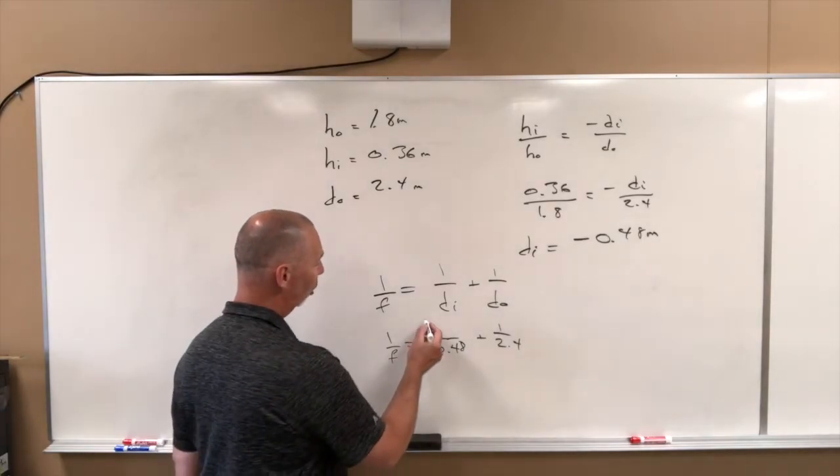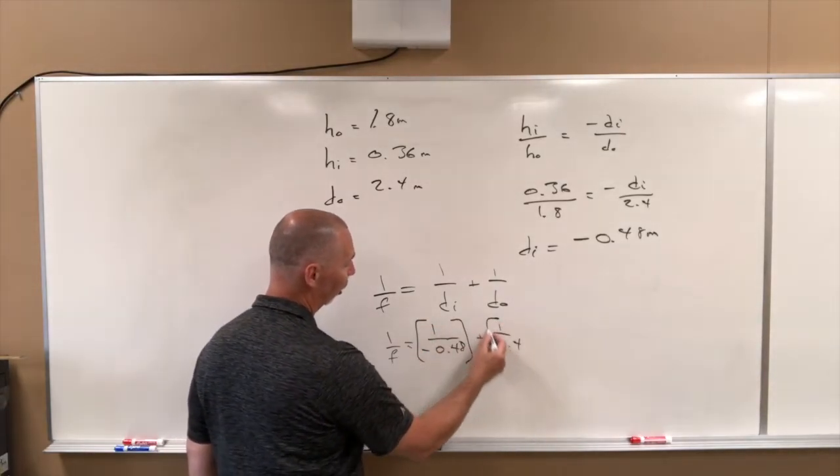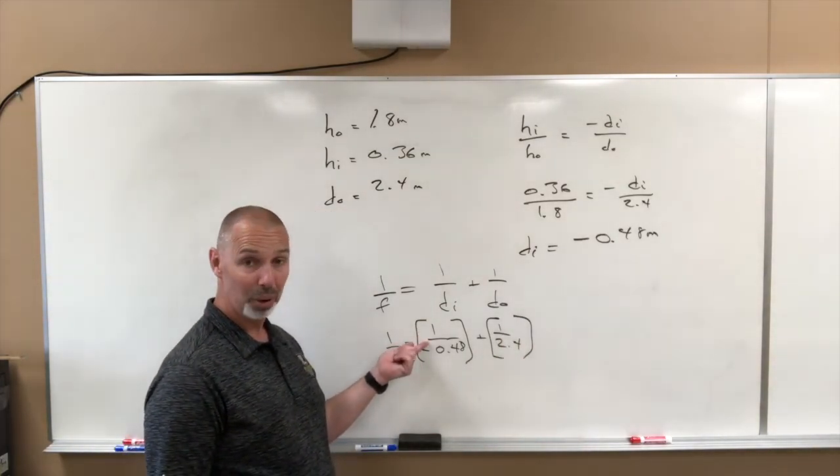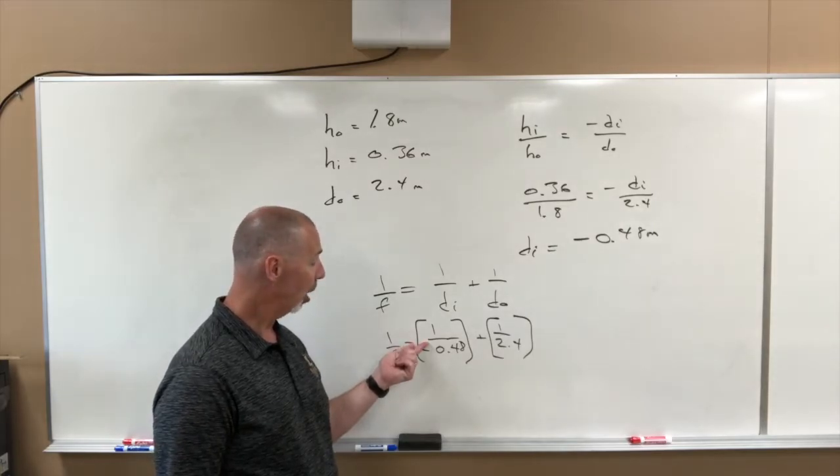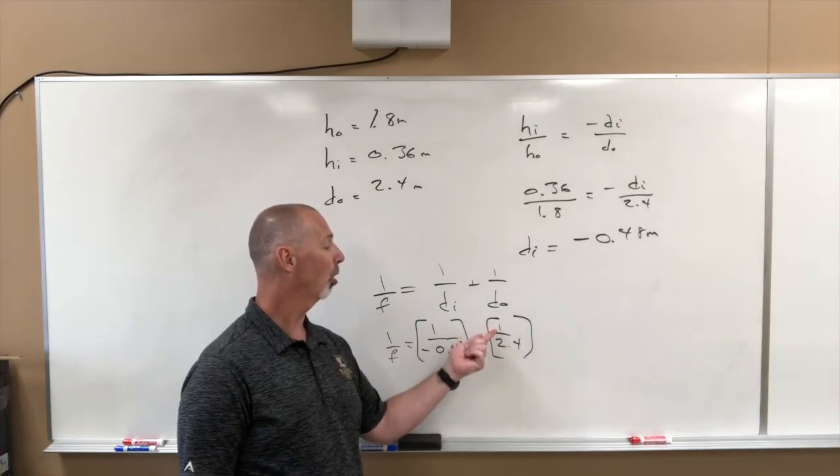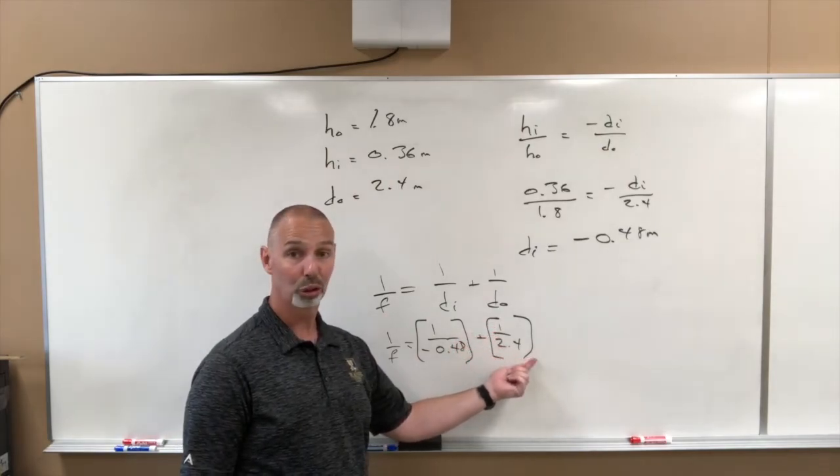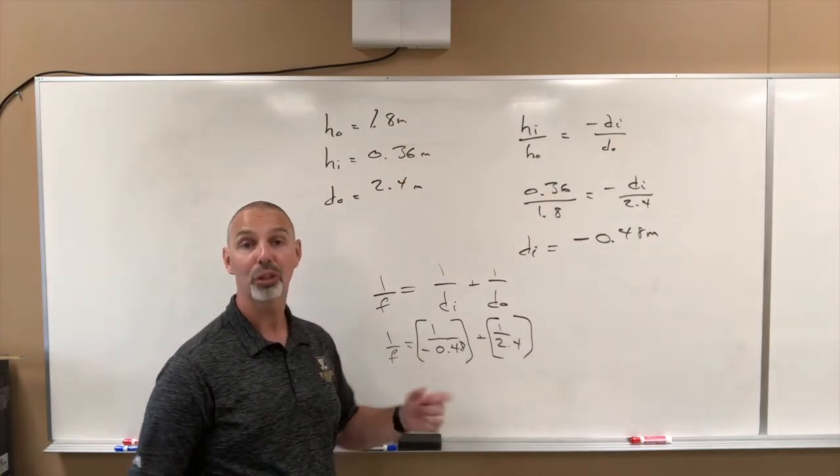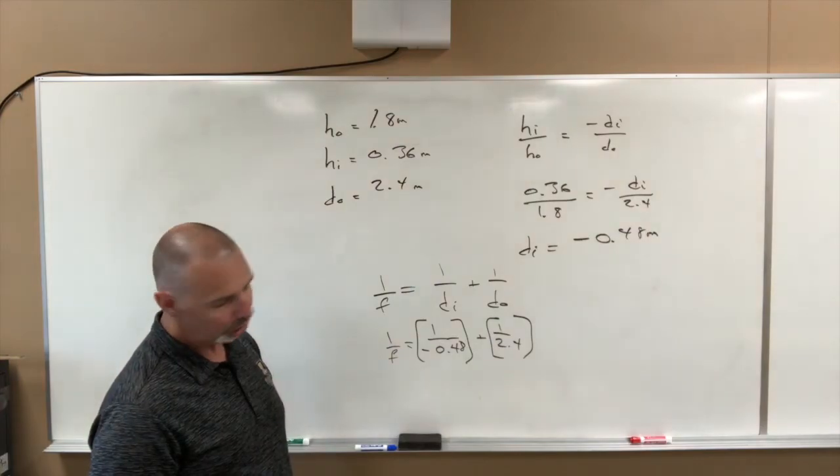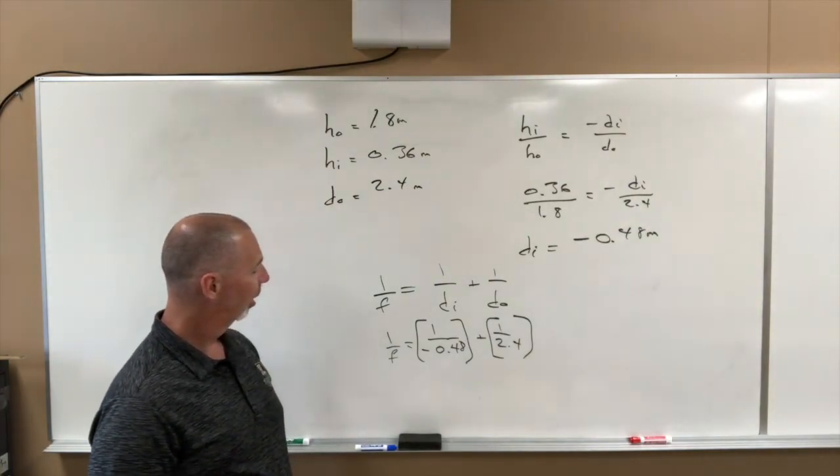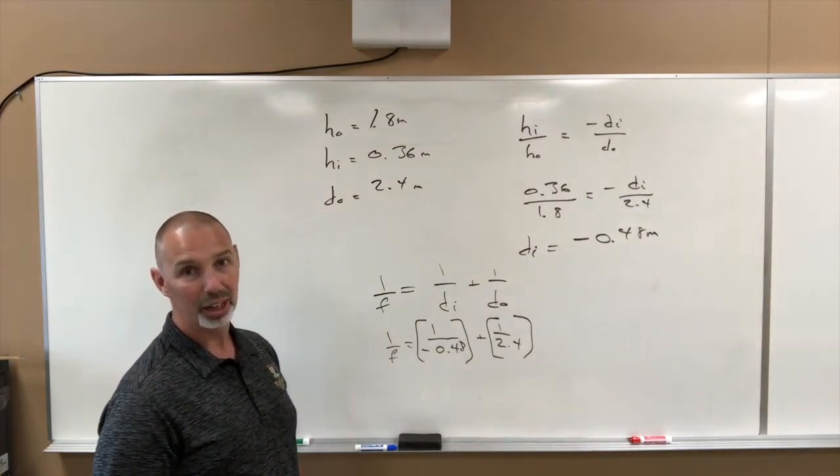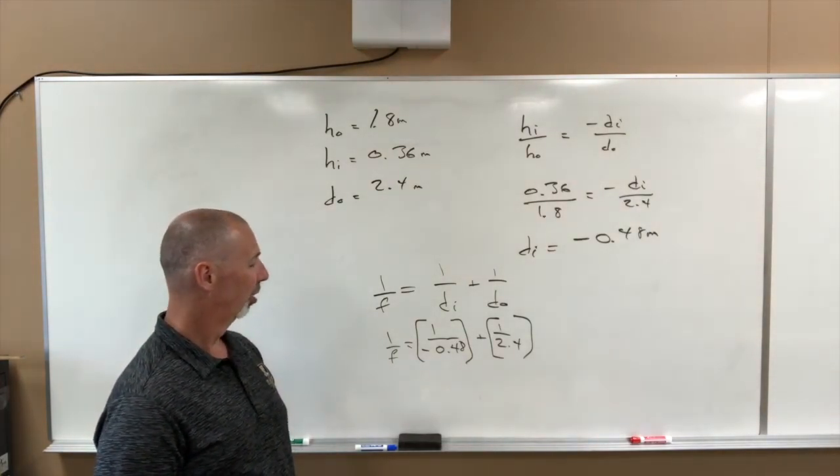There's a couple of different ways you can do it if you want to punch it into your calculator. You could put brackets around these on your calculator, and you would take bracket 1 divided by negative 0.48, close the bracket, plus, open bracket, 1 divided by 2.4, close the bracket. And that would tell you what 1 over F equals, and then you flip it over. So if you do that, you should get, in the end, you're going to get F equals negative 0.6.